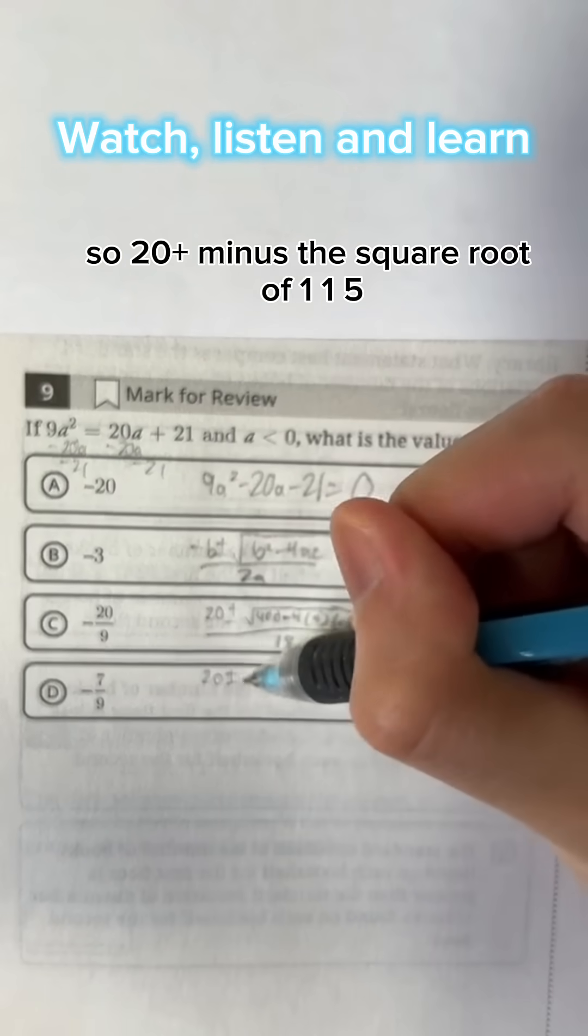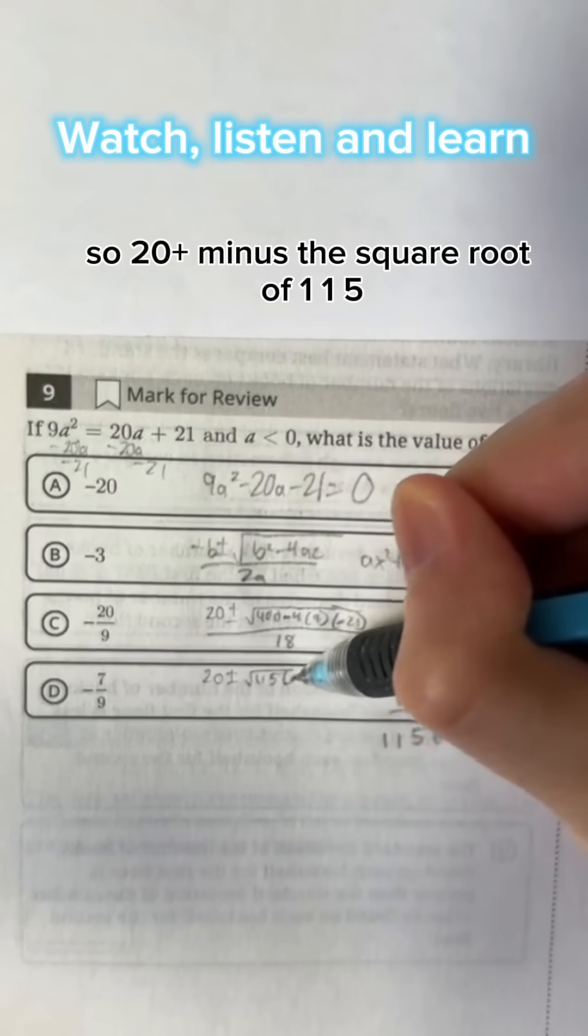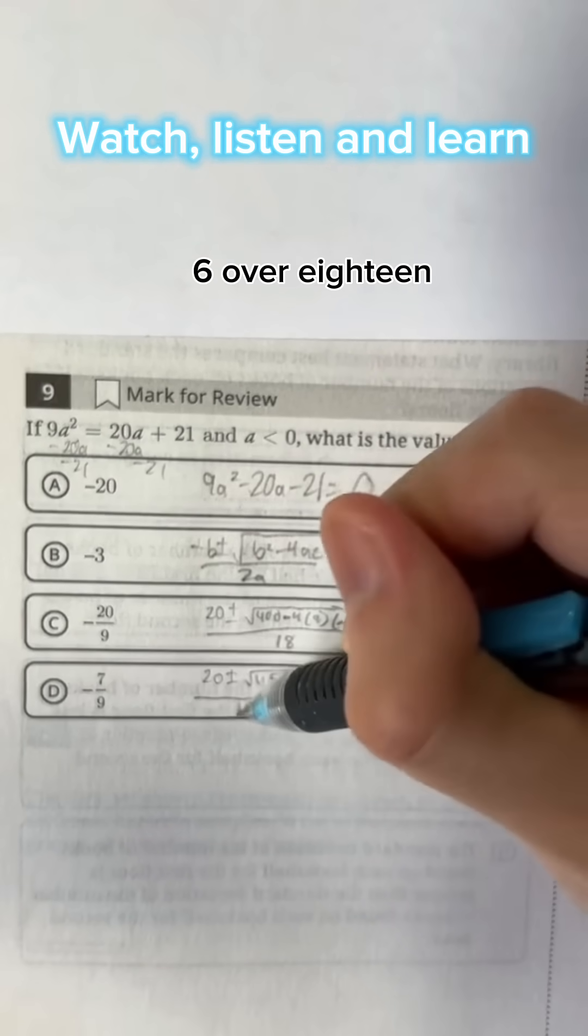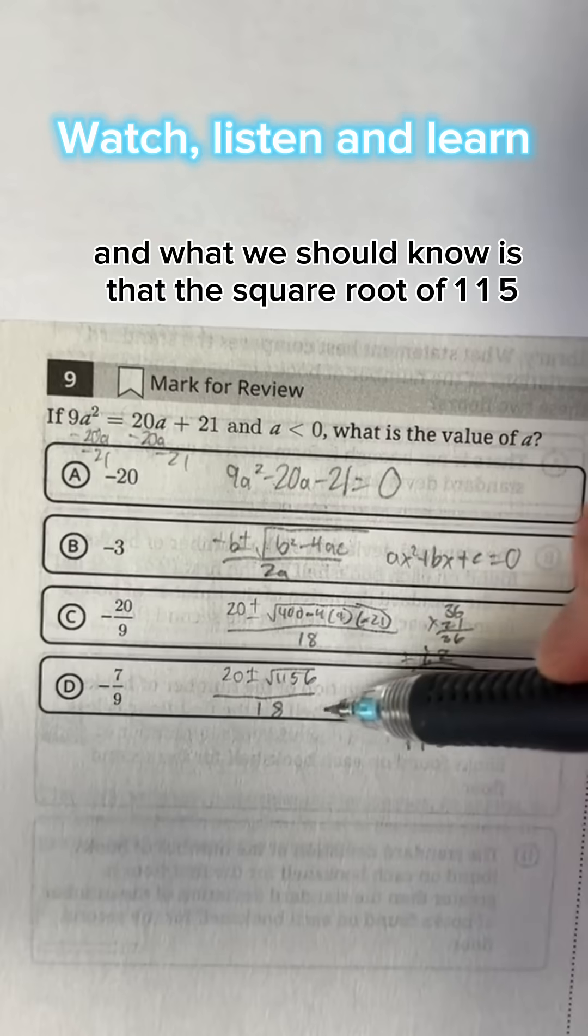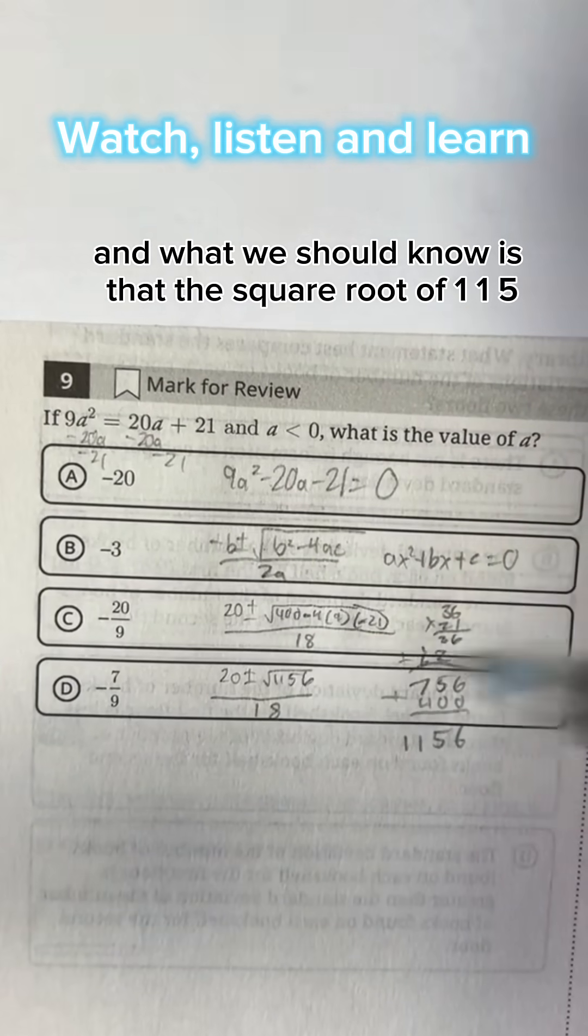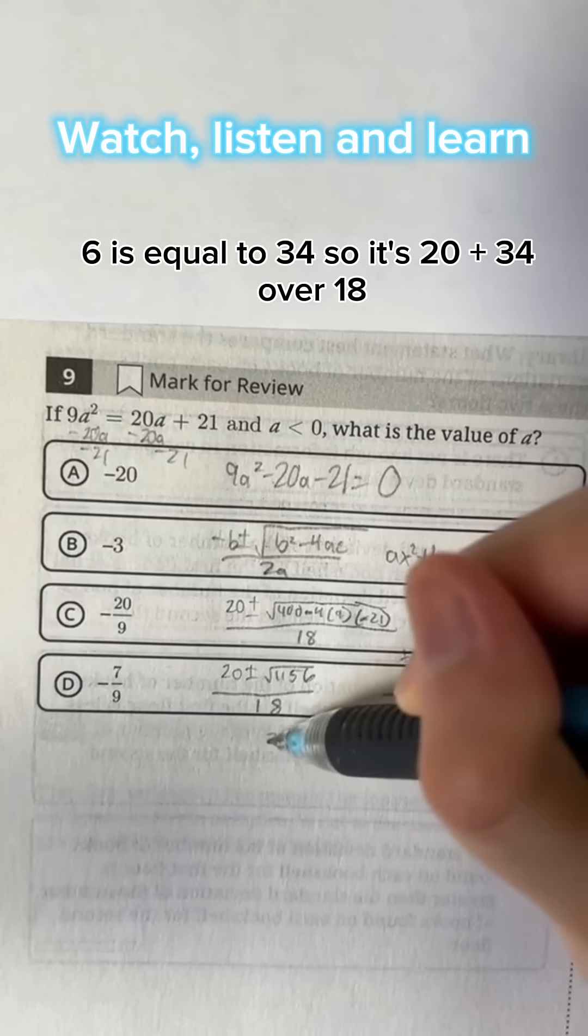So 20 plus minus the square root of 1156 over 18. And what we should know is that the square root of 1156 is equal to 34.